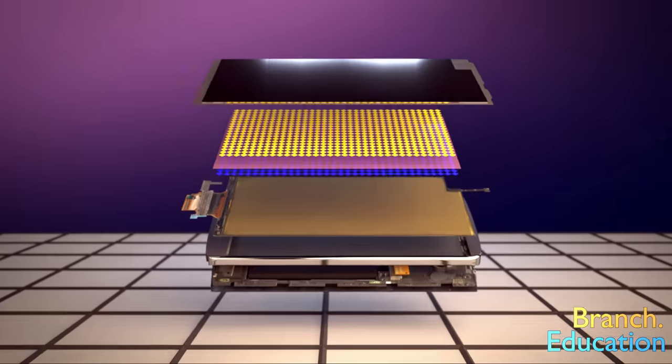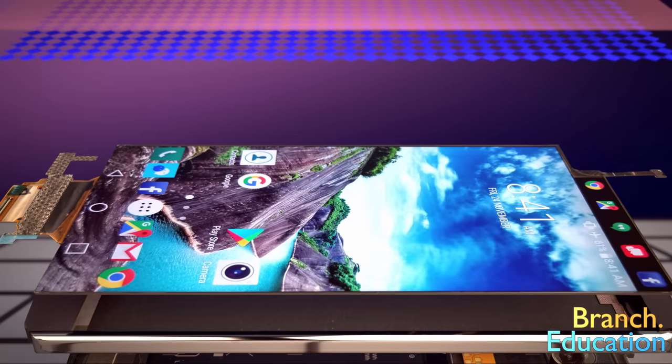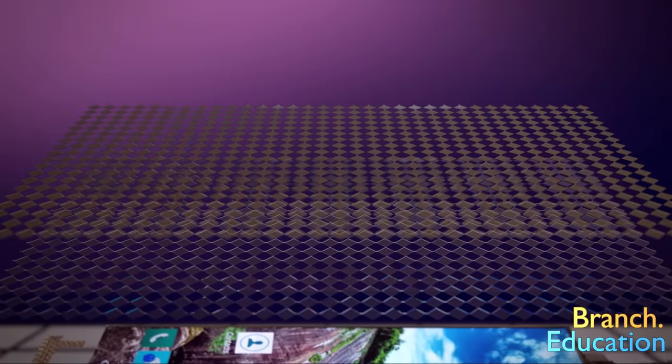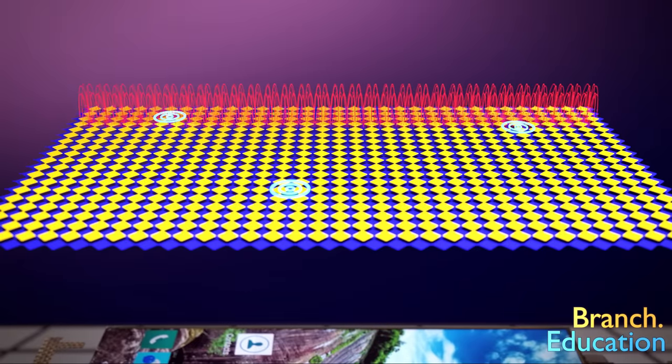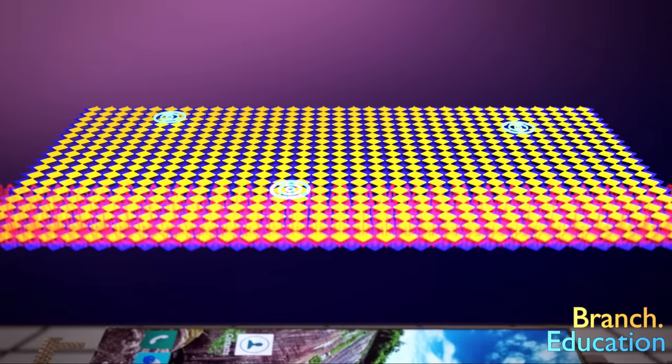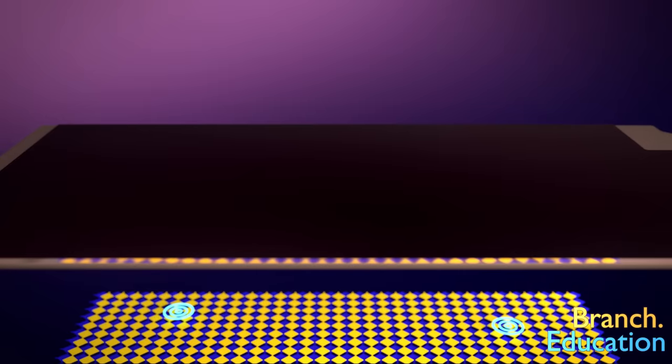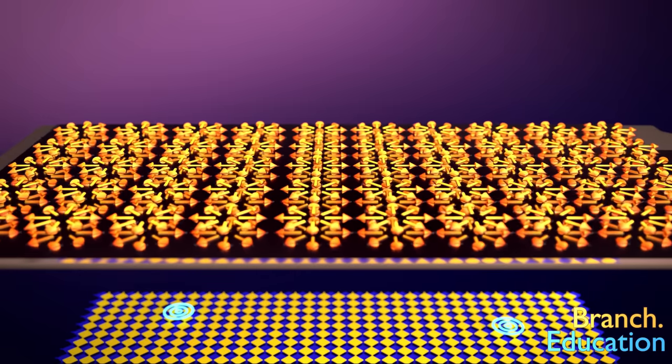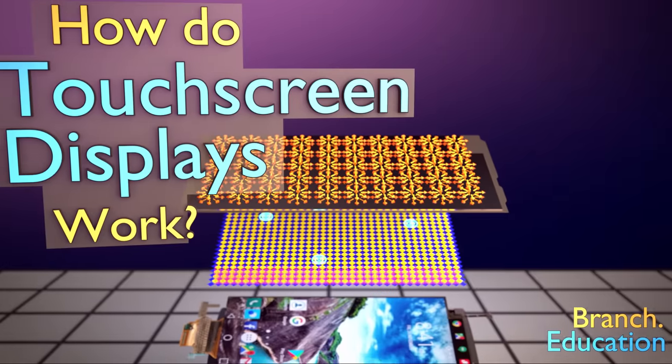So, let's summarize. On the bottom is an OLED display composed of up to 10 million itty bitty little colored lights. On top of that is a transparent projected capacitive touchscreen that can sense one or multiple touches at a time. And on top of that is strengthened glass that protects your screen from scratches and most falls. Now you too are a touchscreen expert.